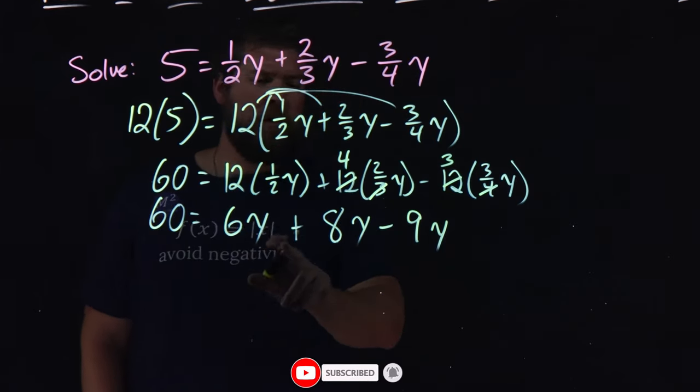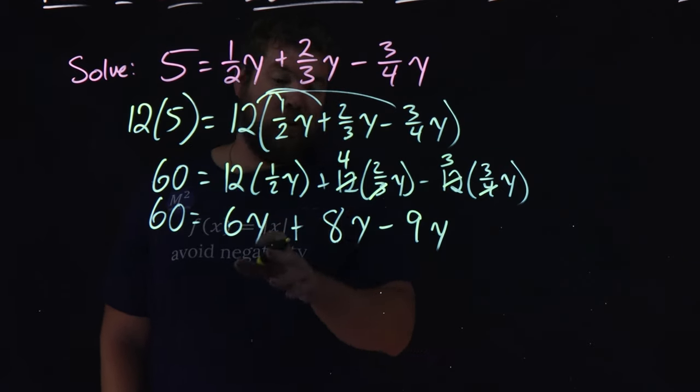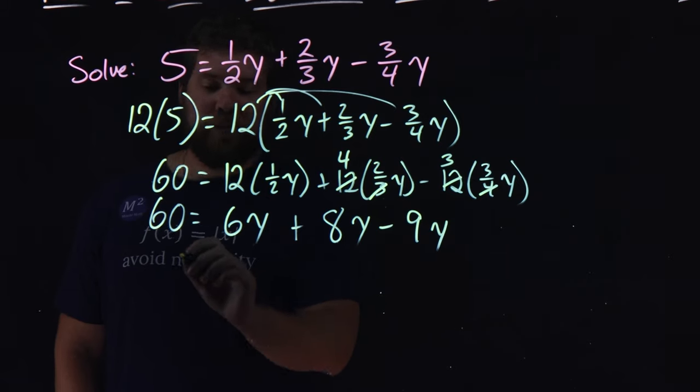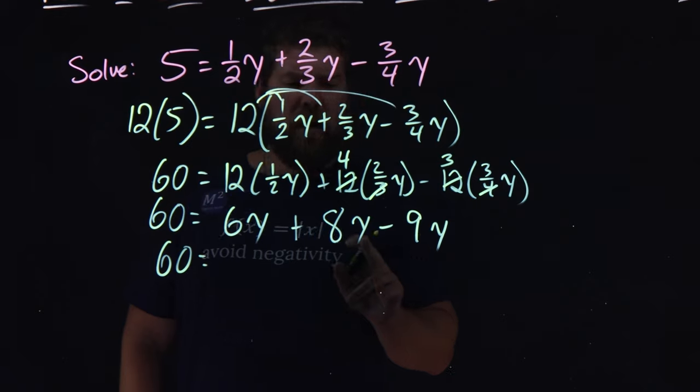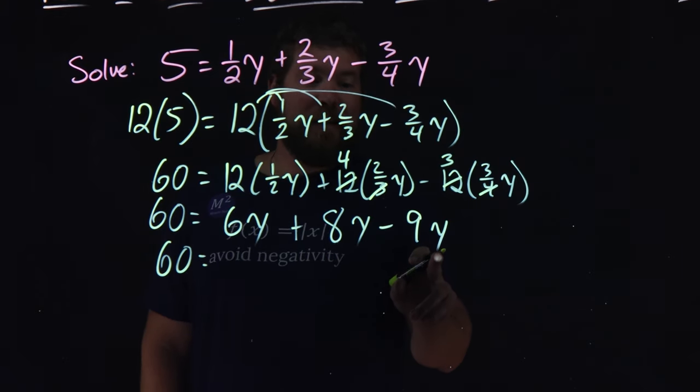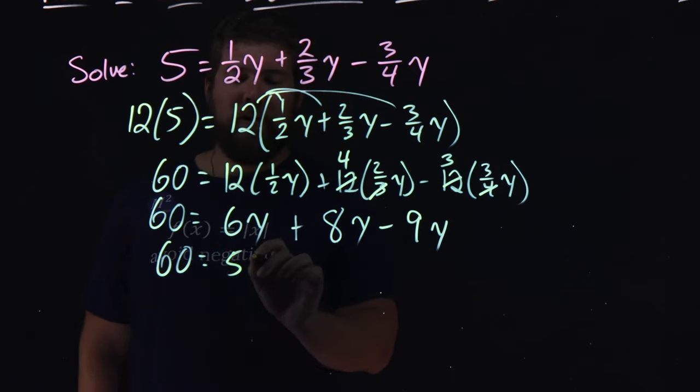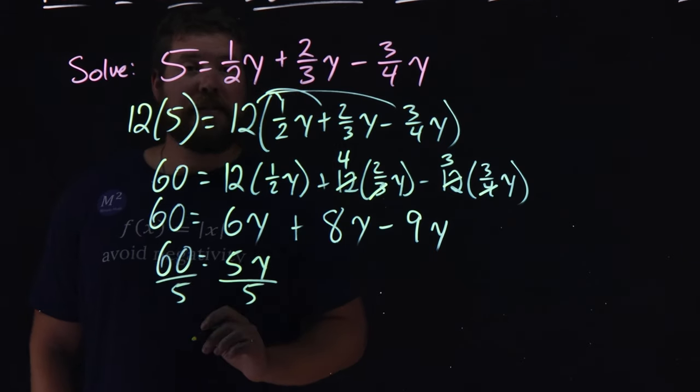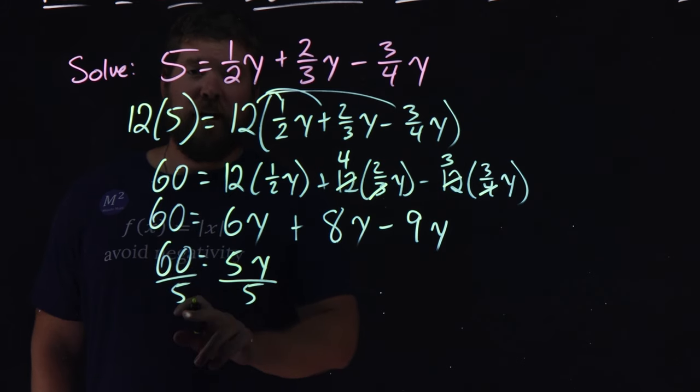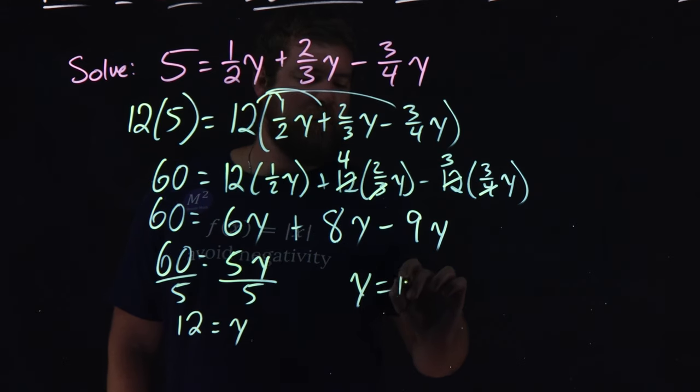But now, we've just got to simplify, and look, each one of these is an integer. Makes it easier now to add the y's together, the like terms. So, 60 equals 6y plus 8y minus 9y. Well, 8y minus 9y is negative 1y. And then 6 minus 1 gives us 5y. We then divide both sides by 5 to get y by itself. And 60 divided by 5 is 12. Y equals 12.